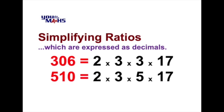Now to simplify this ratio may take a bit more time because the numbers are quite large. A good way to do any division between numbers is to write the numbers as a product of their prime factors.